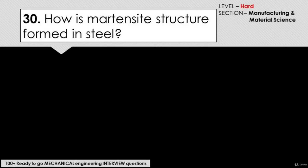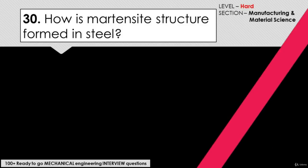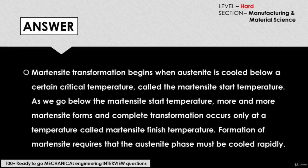How is martensite structure formed in steel? Martensite transformation begins when austenite is cooled below a certain critical temperature, which is called the martensite start temperature. As we go below the martensite start temperature, more and more martensite forms, and complete transformation occurs only at a temperature called the martensite finish temperature.